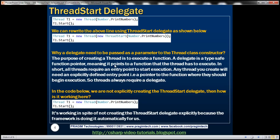And what is a delegate? A delegate is a type-safe function pointer, meaning it is pointing to a function that we want the thread to execute. In short, all threads require an entry point to start execution. Any thread you create will need an explicitly defined entry point, that is a pointer to the function where they should begin execution. So threads always require a delegate.